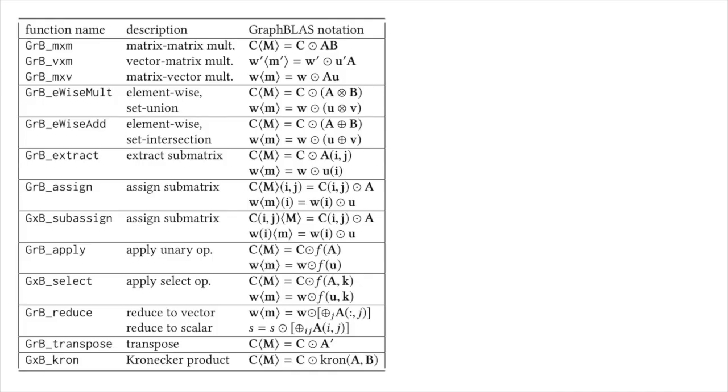The primary GraphBLAS operations include matrix multiply, element-wise operations, extract and assign, and so on. They can all be used with a mask and with many different data types, operators, and semi-rings.